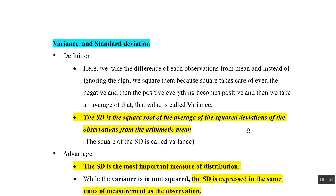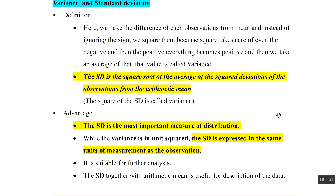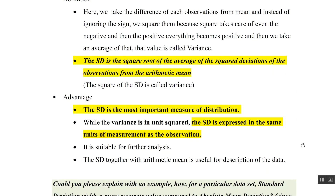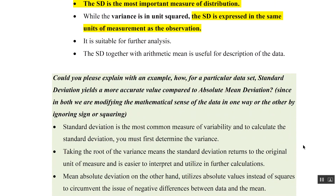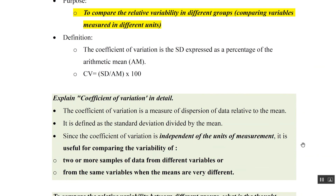The advantage of standard deviation is that it is the most important measure of dispersion and is expressed in the same unit of measurement as the observations. The coefficient of variation (CV) compares relative variability across different variables measured in different units. It is standard deviation divided by mean, multiplied by 100. It is independent of unit measurements and useful for comparing two or more samples when means are very different.